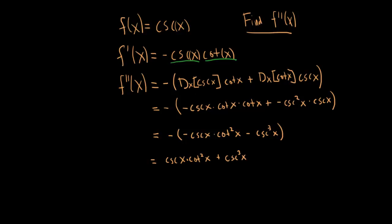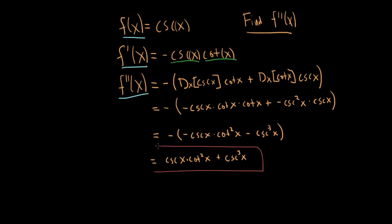Just to recap: here is the original function f. We took the derivative and got f prime using a memorized rule — the derivative of cosecant is negative cosecant cotangent. We then found the second derivative using the product rule: derivative of the first times the second, plus derivative of the second times the first. We took two more derivatives, collected like terms, and distributed. The final answer for f double prime of x is cosecant x cotangent squared x plus cosecant cubed x.